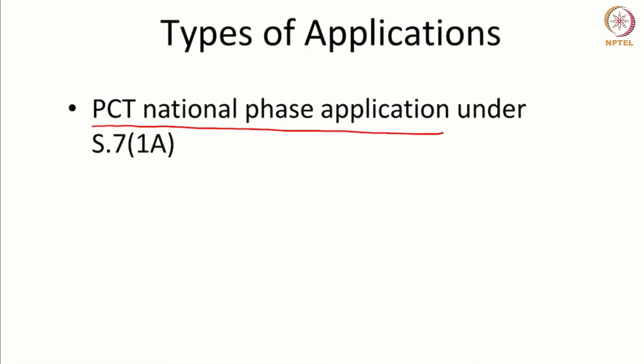It is the national phase or the follow-up of a PCT application where you enter India within 30 months from the date of priority. This national phase application will now become an Indian grant. That is the fourth type of application you can file in India.